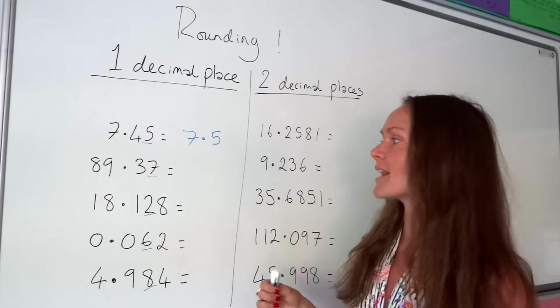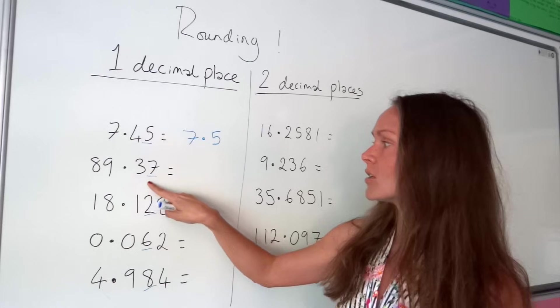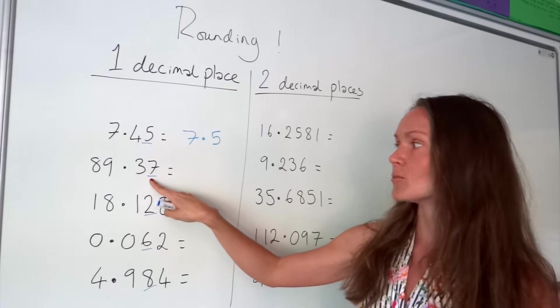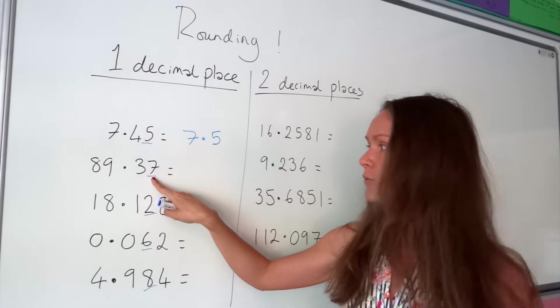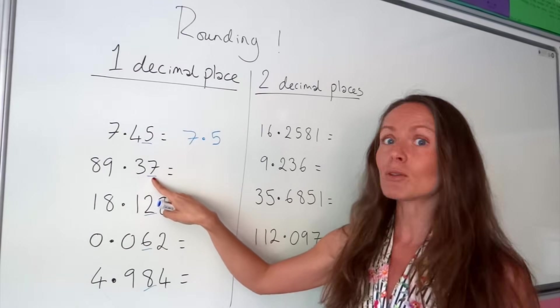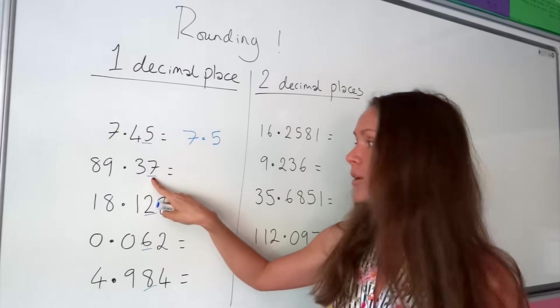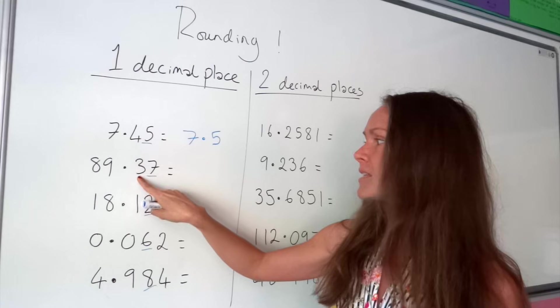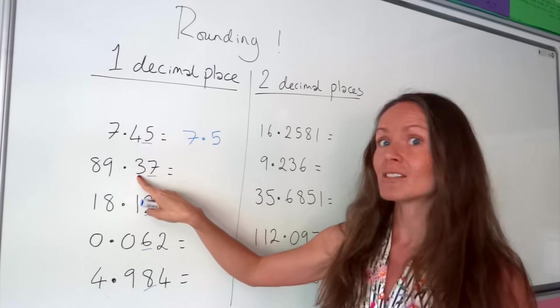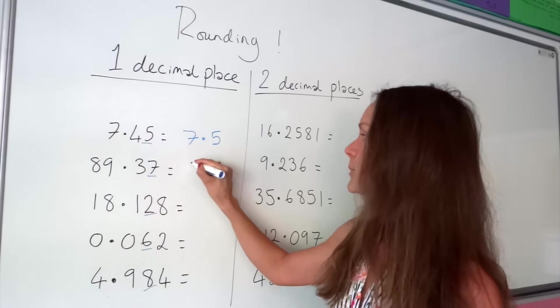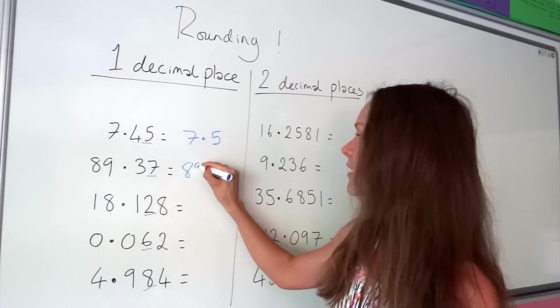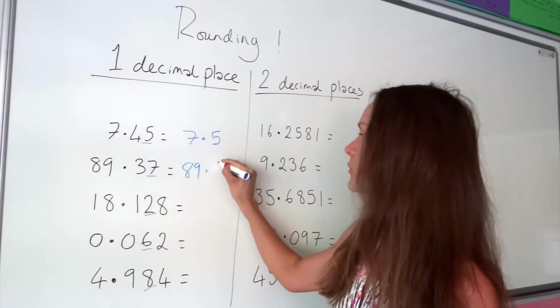Let's look at the next one. Again, the second number after the decimal is bigger than five, so it means we round up. So this number changes to the number four, and we're left with 89.4.